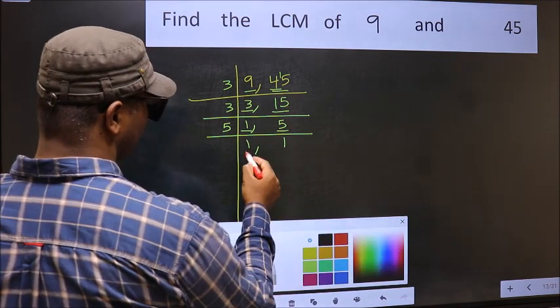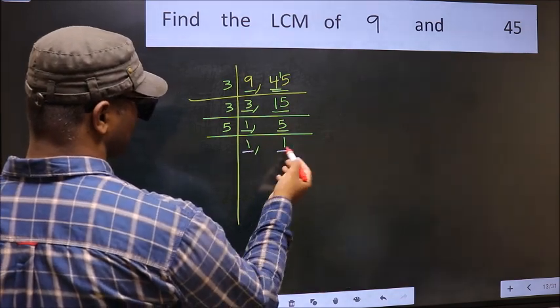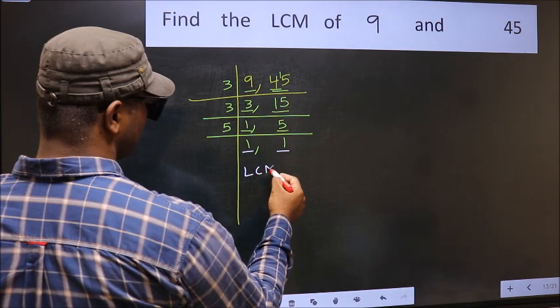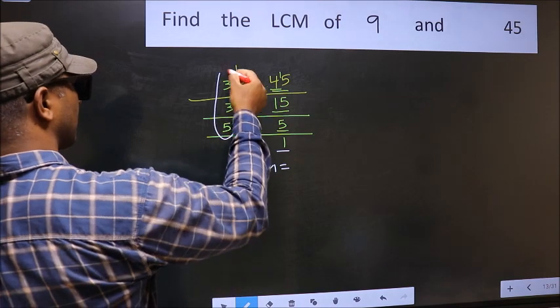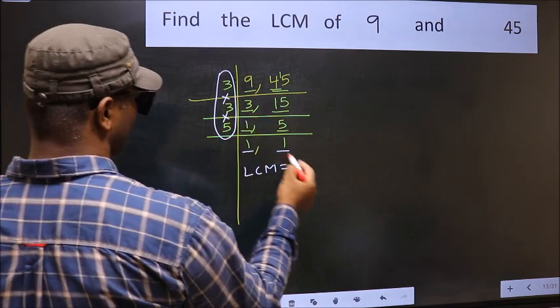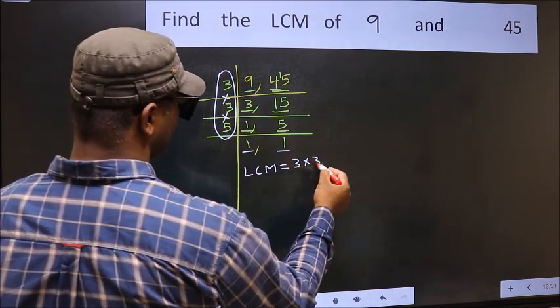We got 1 in both places. So our LCM is the product of these numbers. That is 3 times 3 times 5.